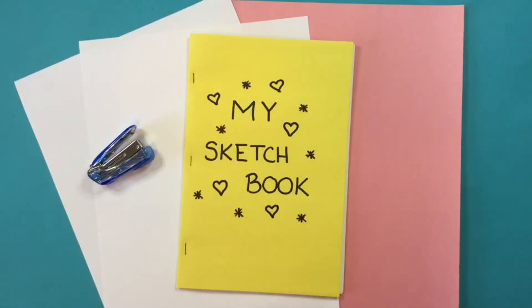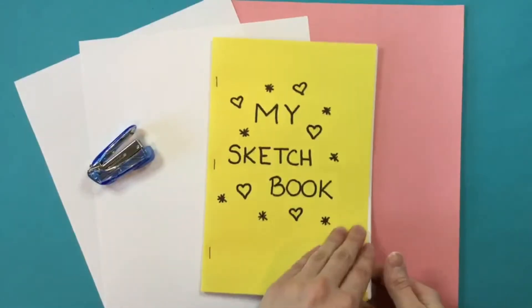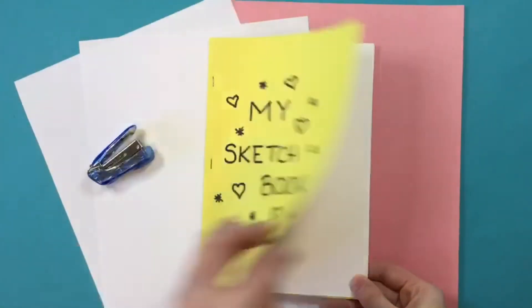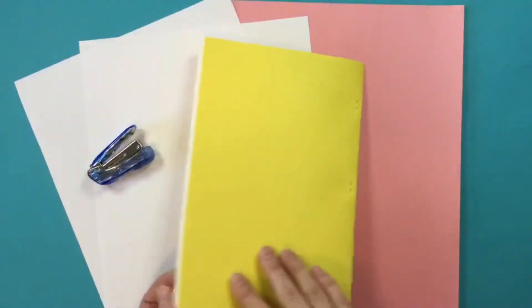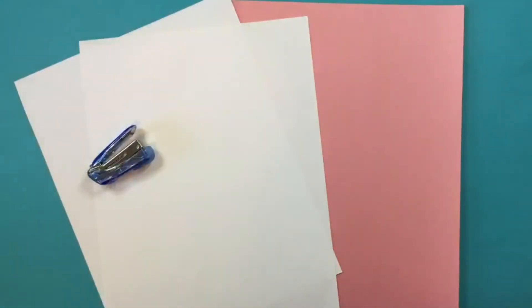Okay, so to make our sketchbook, we're going to want to start by gathering our materials. You're going to want several sheets of plain white paper, maybe even some colored paper. That can be for your cover, or you can also put the colored paper inside, and you're going to want a stapler. Now I have a very small stapler that can only staple a few sheets. You might want a larger stapler for more papers.